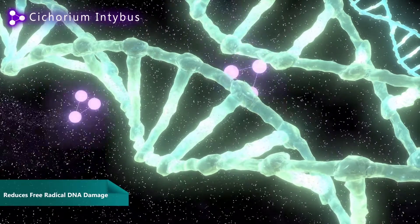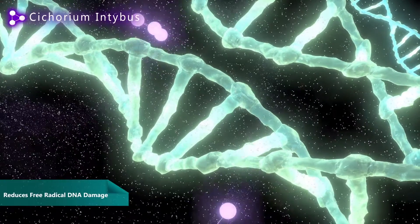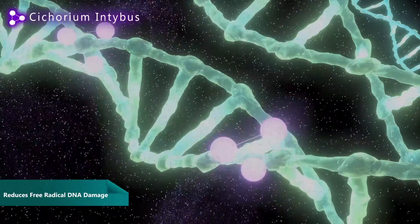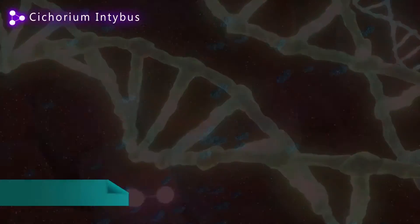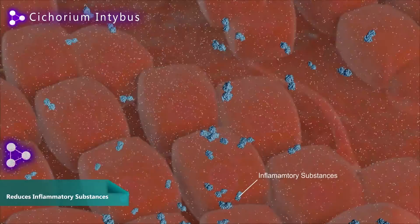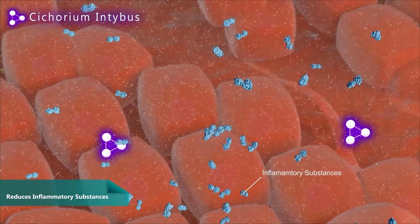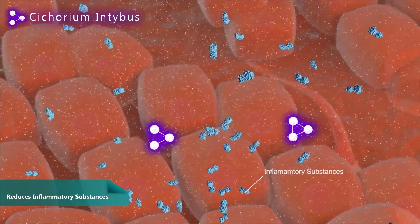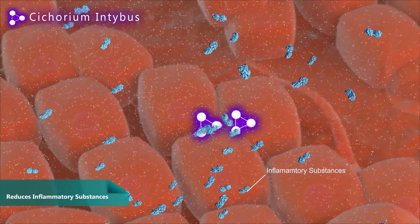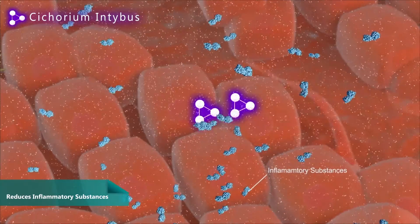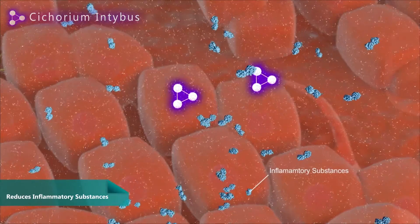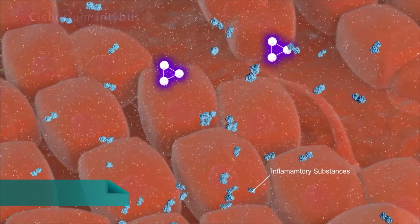Cicorium intibus increases the glutathione levels in the liver and reduces free radical DNA damage. It also reduces the inflammatory substances released during diseased conditions.